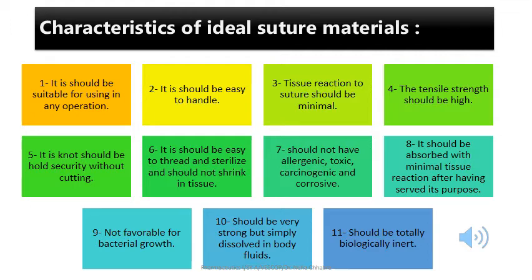If the same material is used without a needle to stop bleeding — by tying off severed blood vessels — then this strand is called a ligature. When such material without a needle is used to stop bleeding by tying off severed blood vessels, the strand is called a ligature. In common language, it is a piece of suture used to shut off a blood vessel or other anatomical structure. The process is called ligating.